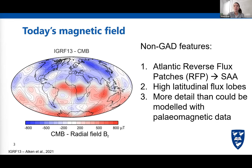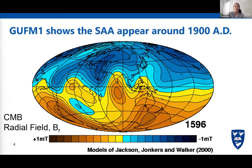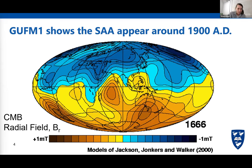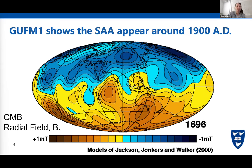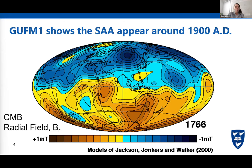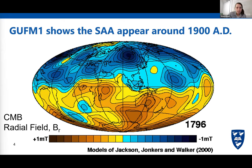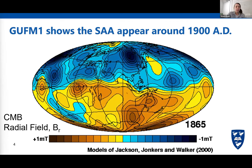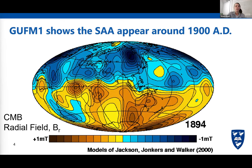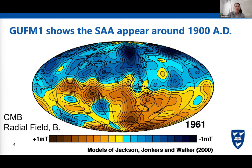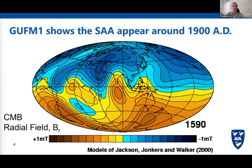When we show time-average field models, most of the detail has been averaged out. Here's a time-varying model of the South Atlantic — the 180-degree meridian is central — and it shows that the South Atlantic anomaly does not appear until around 1900. There's the first reverse flux patch on the core-mantle boundary, moving west to its current location, forming two clear reverse flux patches that constitute the South Atlantic anomaly.